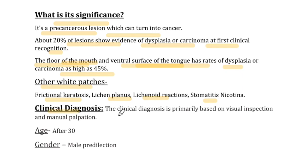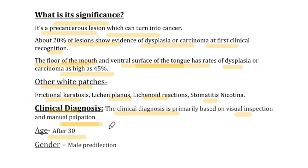Clinical diagnosis is primarily based on visual inspection and manual palpation. You visually check what type of lesion it is and what color it is, then manually palpate and scrape. If it is non-scrapable, that is an important clinical feature. Age of onset is after 30 years, and there is a male predilection.